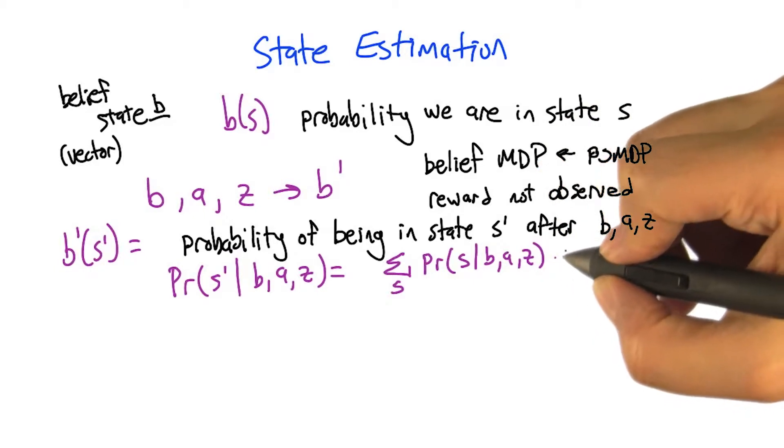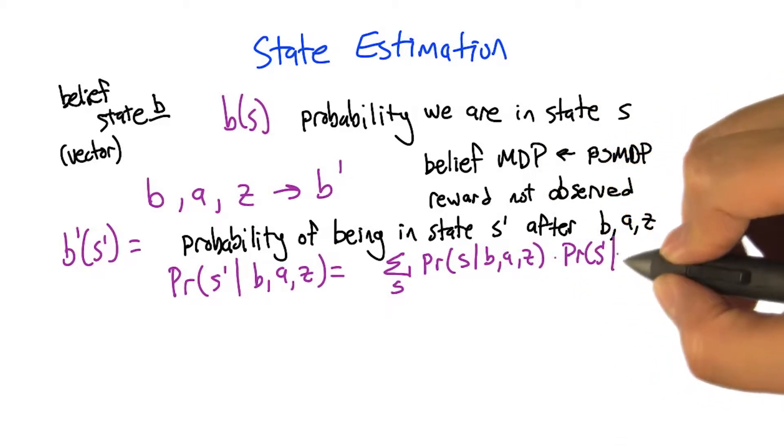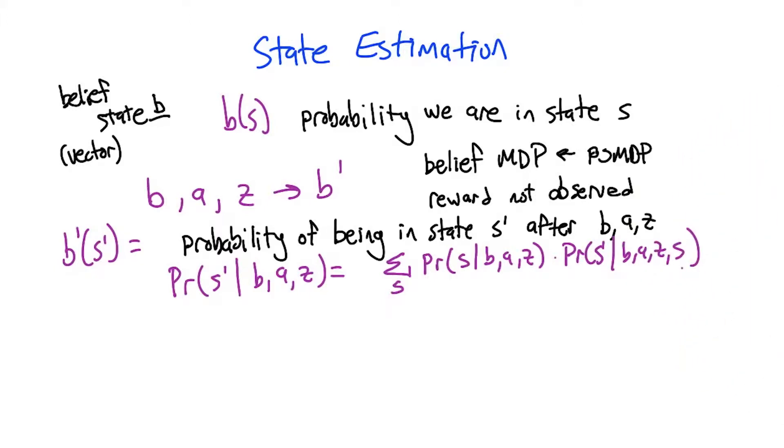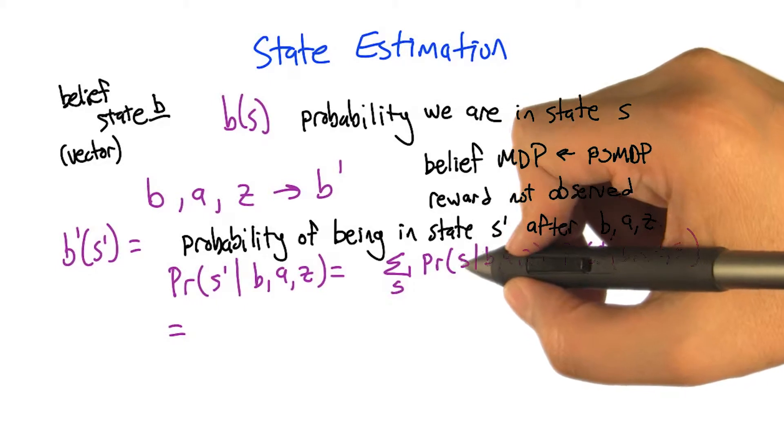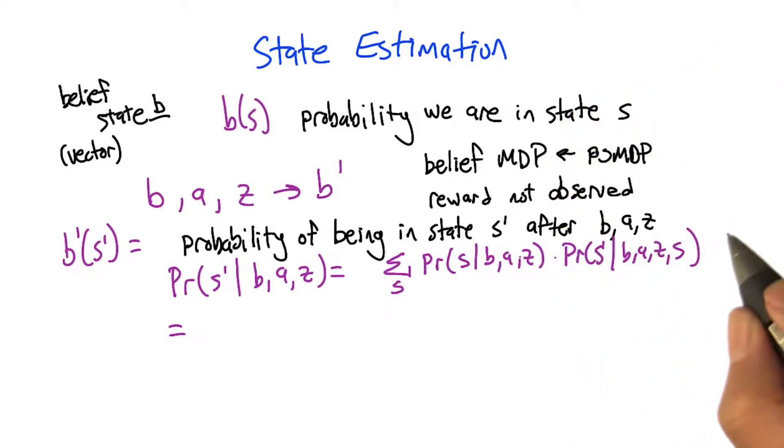Then, given that, what's the probability of the next state, given that state? So this is going to help us break things down successfully. So let's see if we can do that. So what do we know about the probability of being in a state, given a belief state that we took an action and we made some observation?